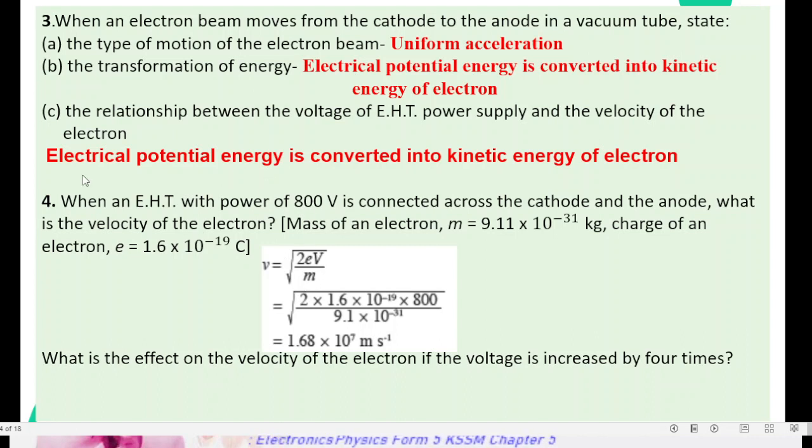So, for part C here, you can write down half mV squared equals to EV. Then, you can rearrange the formula, make it V as a title, thus you get V equals to square root of 2EV divided by M.